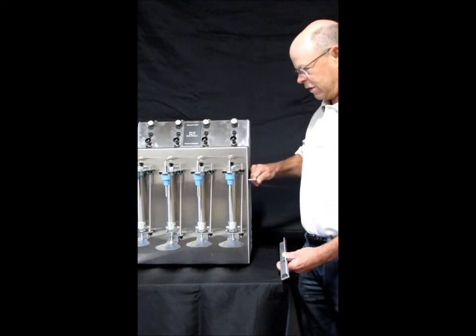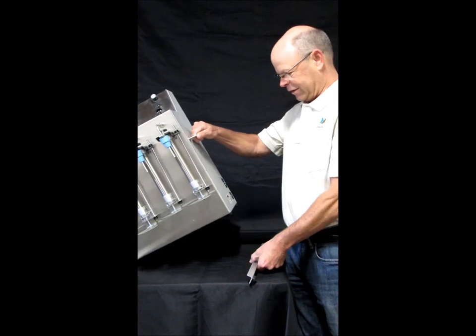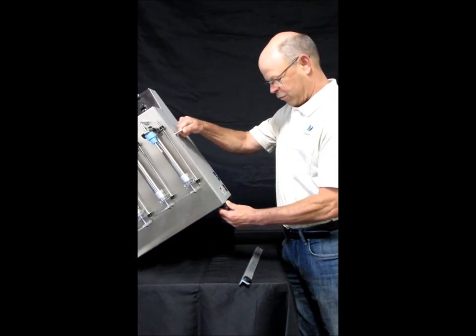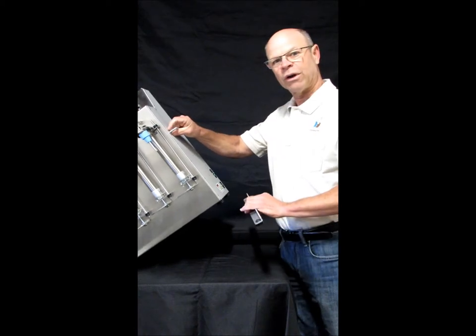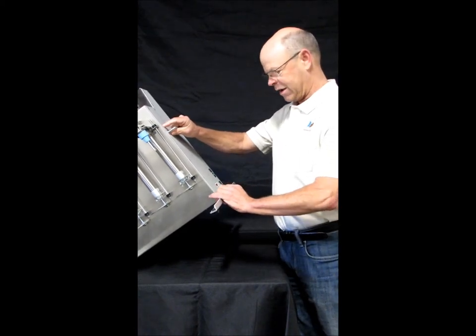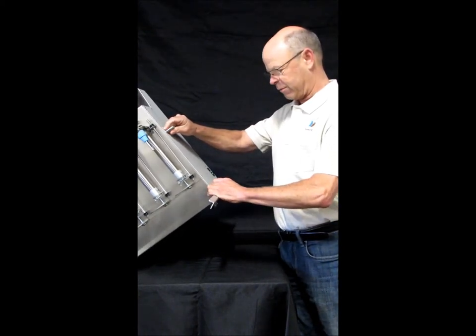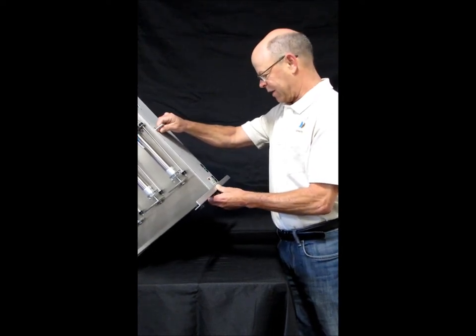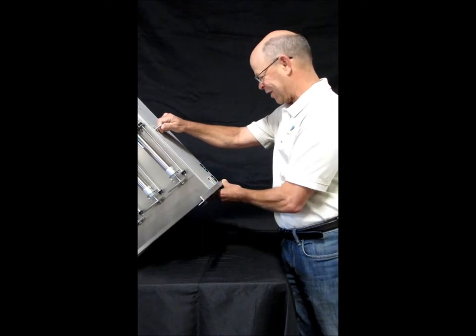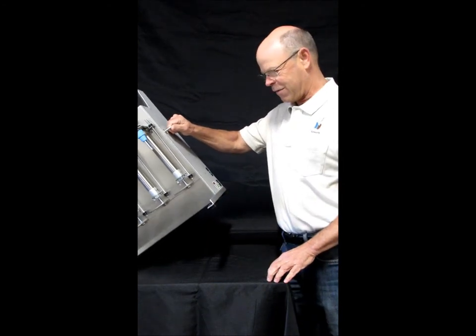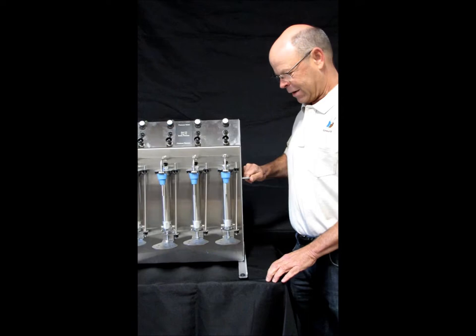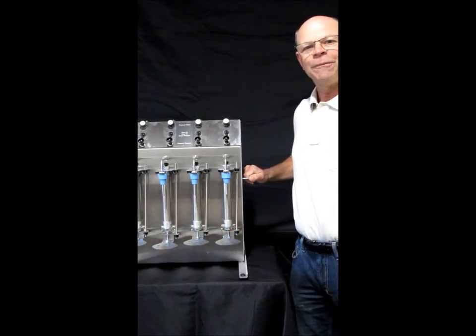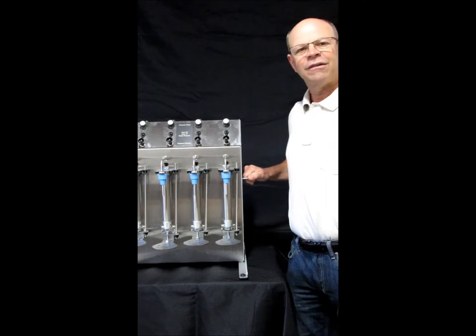They're easy to install. Simply tilt the filler up and you will slide the support leg between the filler enclosure and the rubber feet. Sometimes this is done with a second person. There you go. It's in place. Now it's set. The other side has already been installed so the filler will not tip forward.